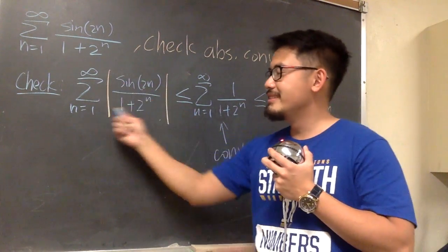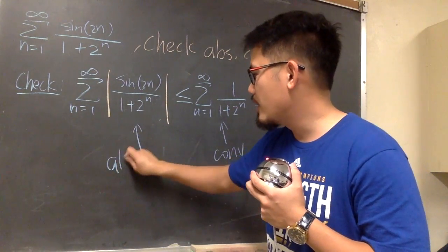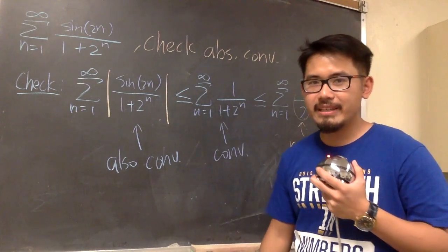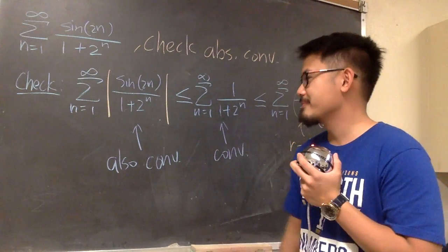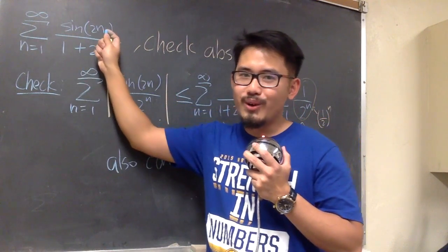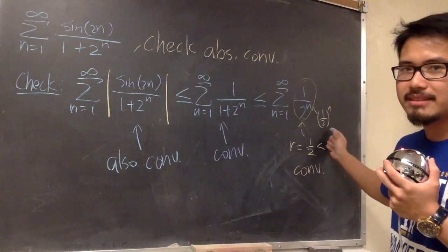And likewise, this is less than a convergent. So of course, this at the end also has to converge. So now here's the conclusion. The absolute value version of the very original, this right here, converges by direct comparison test.